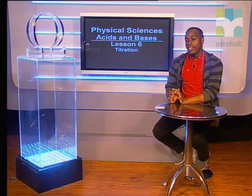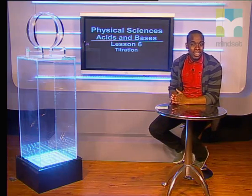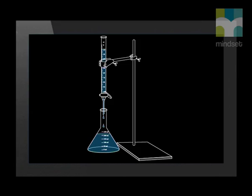Hello, Grade 12s. In this lesson, we'll focus on acid-base titrations. This is the process carried out on an acid or base of unknown concentration in order to determine the volume or concentration of that acid or base. When a titration is conducted, a standard solution of an acid is used to neutralize a solution of a base of unknown concentration, in order to determine the volume or the concentration of that base.